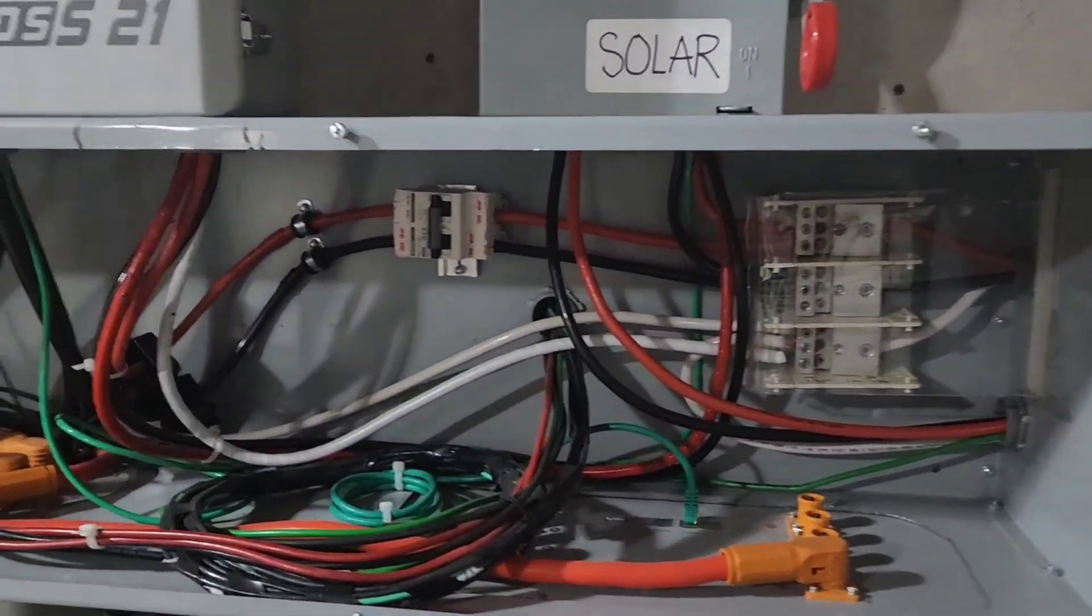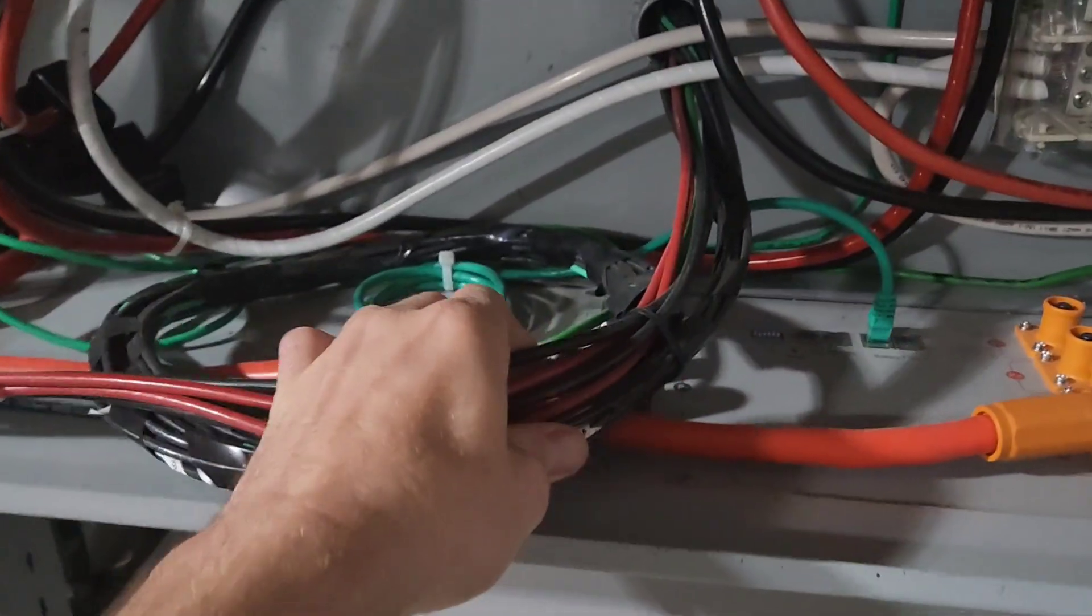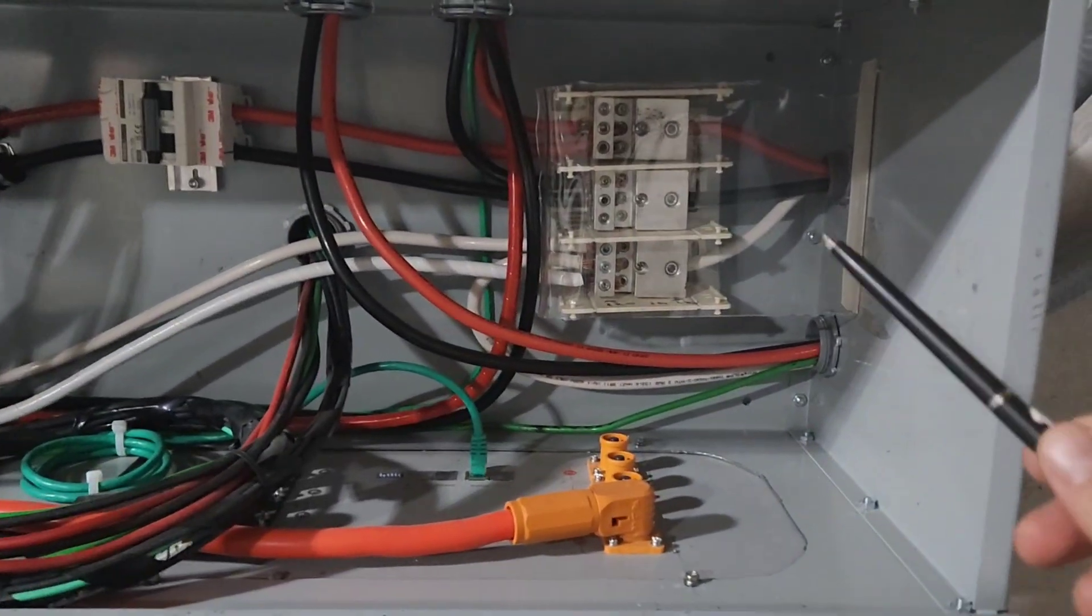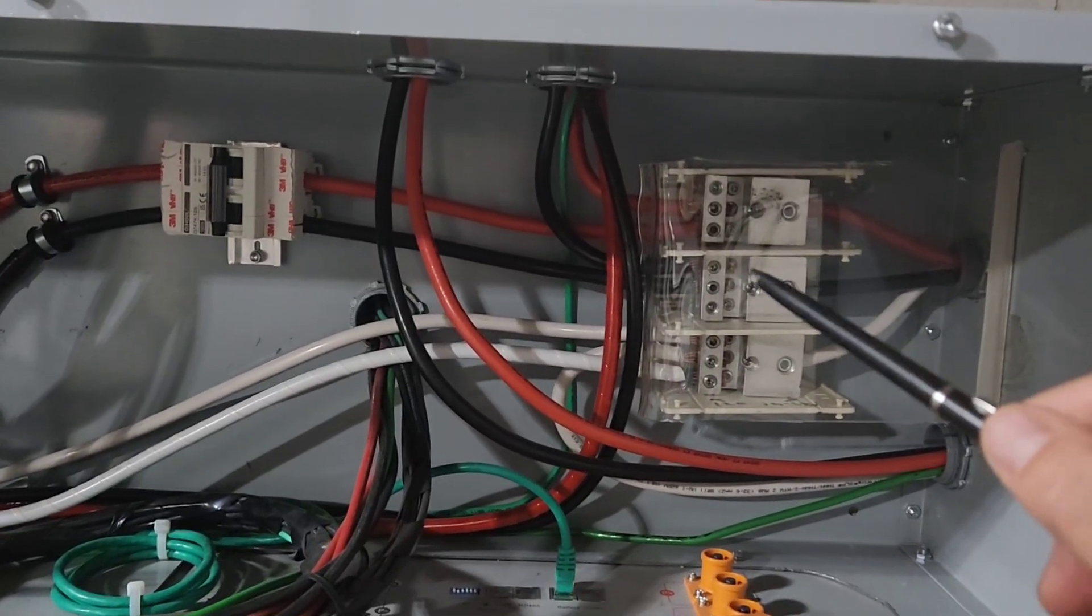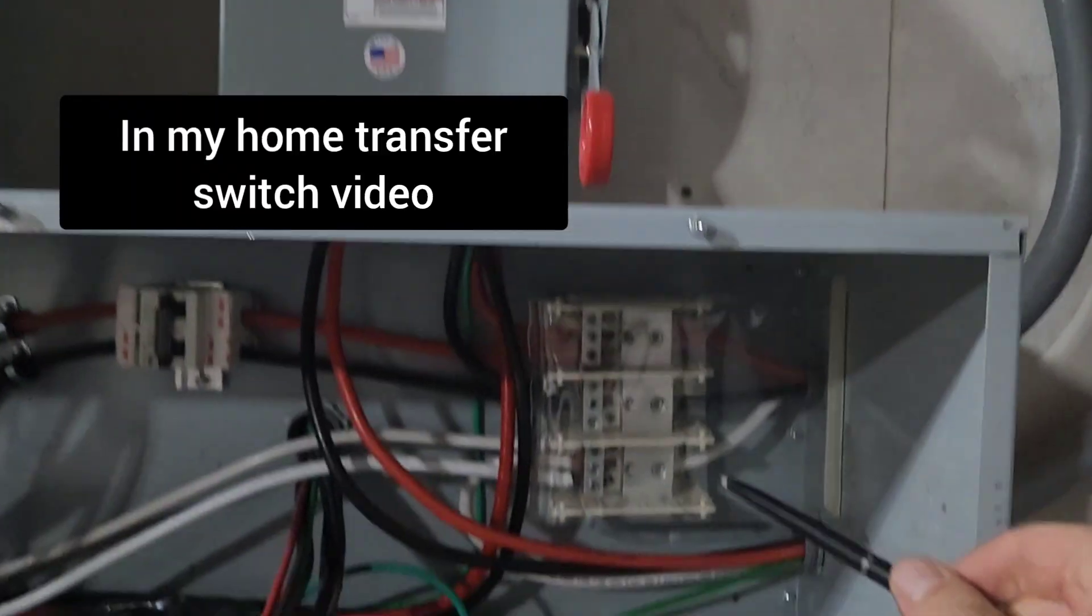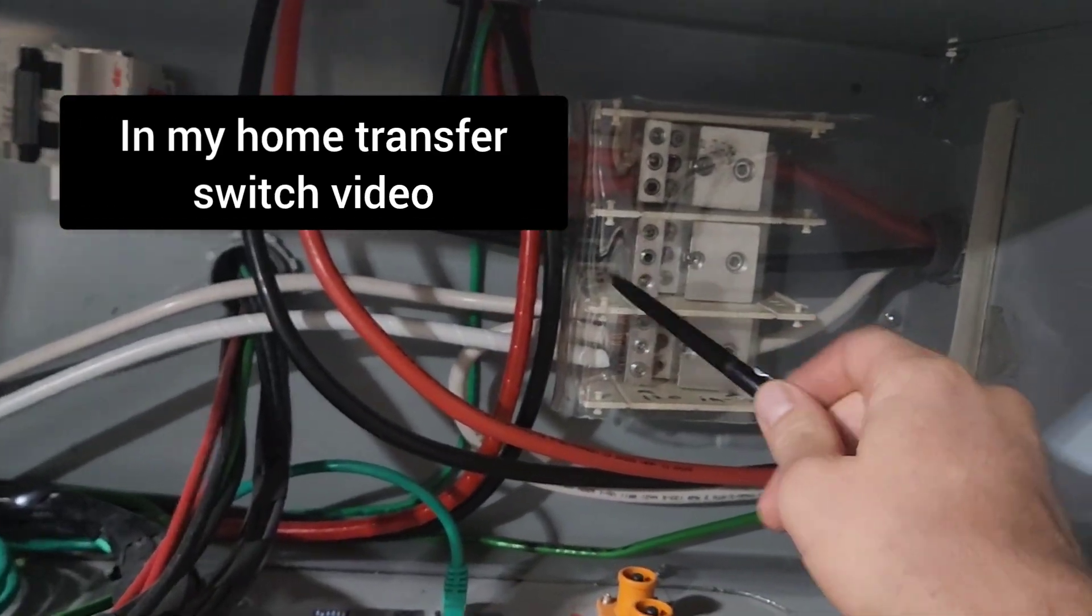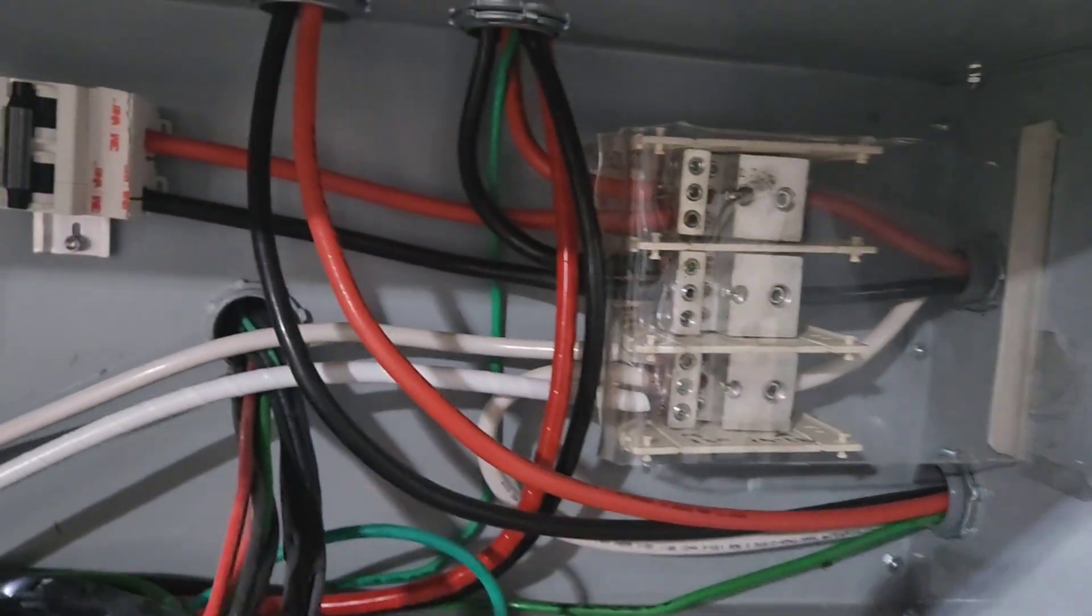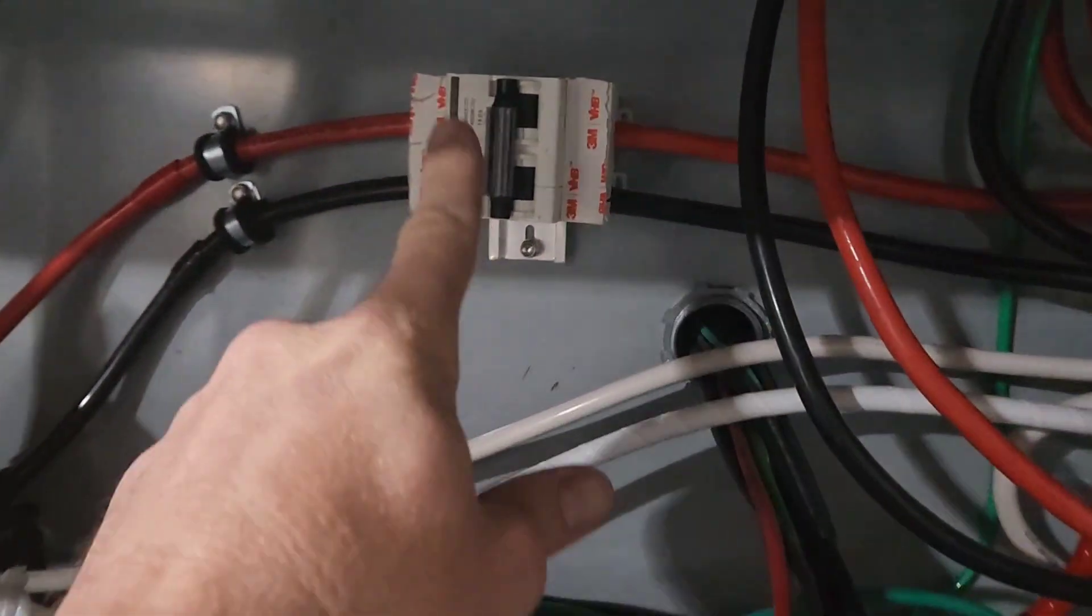And so here is the system. Sorry, there is a lot of wires in here. This is just a loop of solar wires. But yeah, the grid power comes in here, goes into this distribution block. And in this video, this install video, I have all the details on this distribution block. I added my plexiglass.